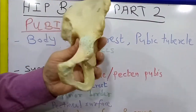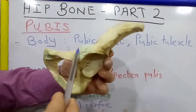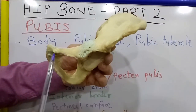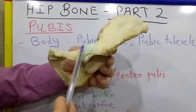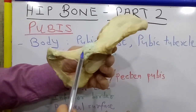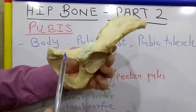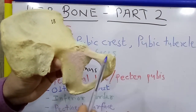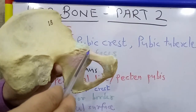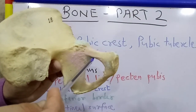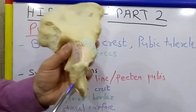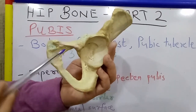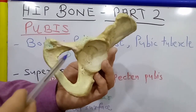The three surfaces are: first, the pectineal surface, which is a triangular surface between the pubic tubercle and the ileopubic eminence — this is the pectineal surface or superior surface. And this is the posterior or pelvic surface between the superior and inferior borders. And there is an anterior surface or obturator surface between the anterior border and the inferior border.